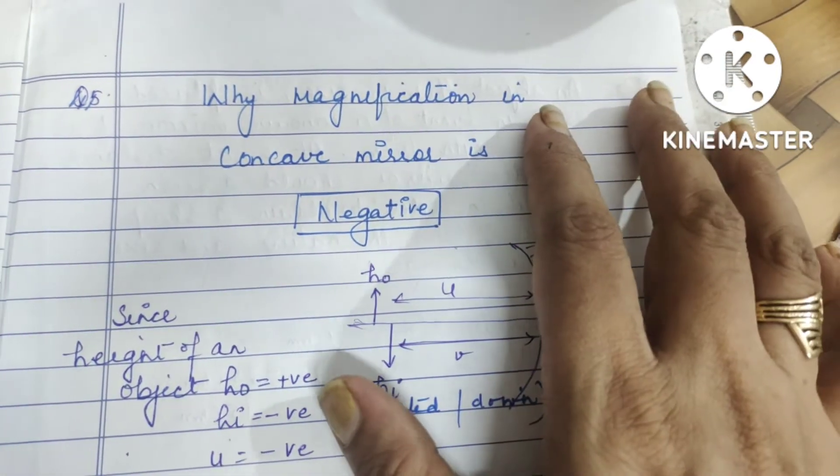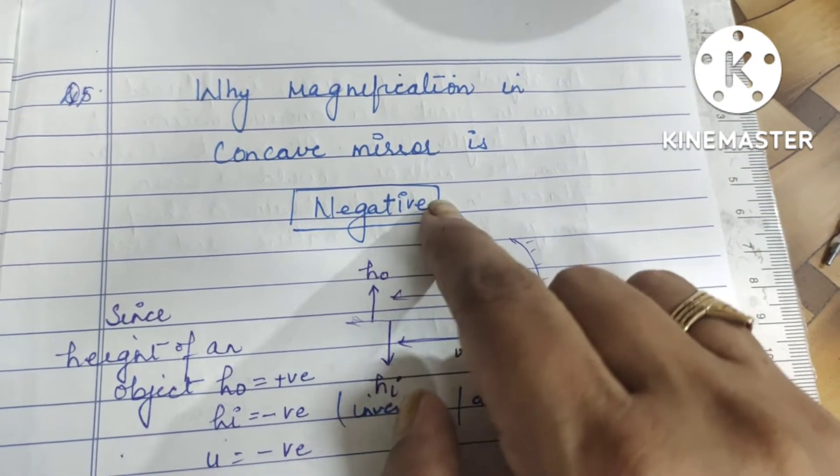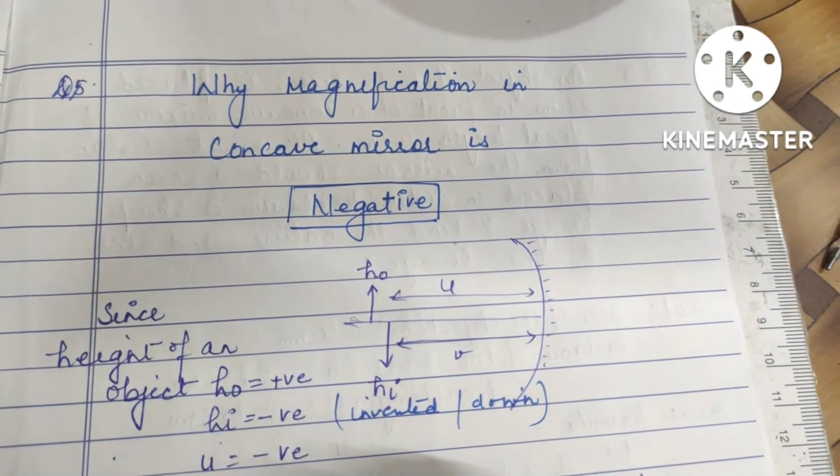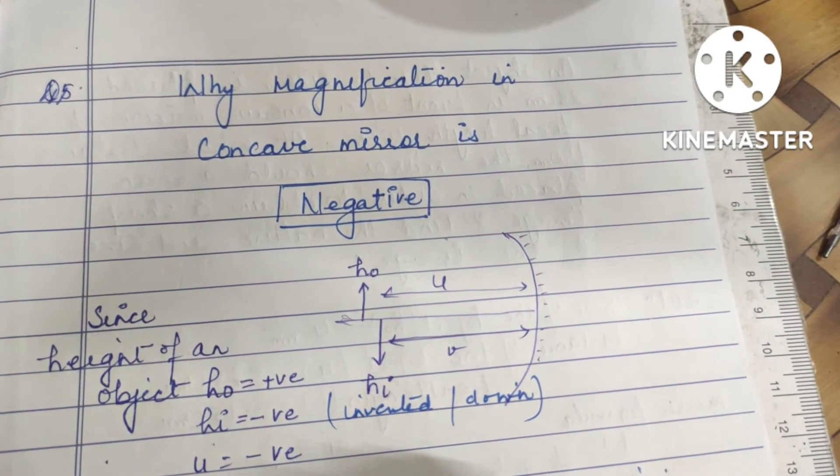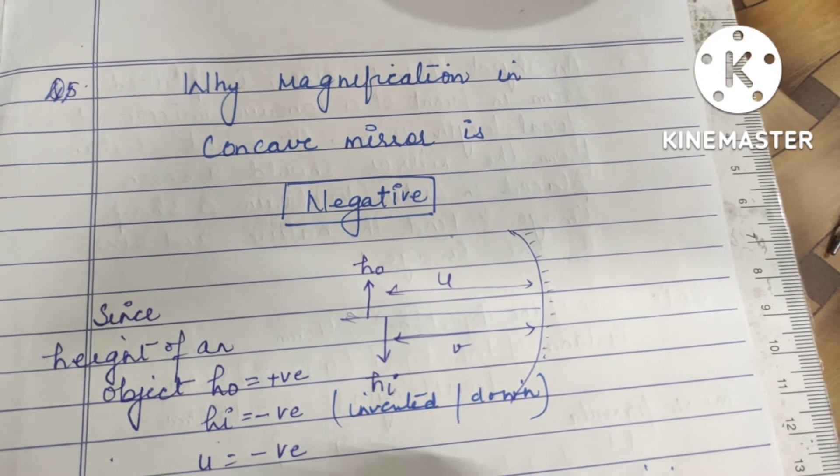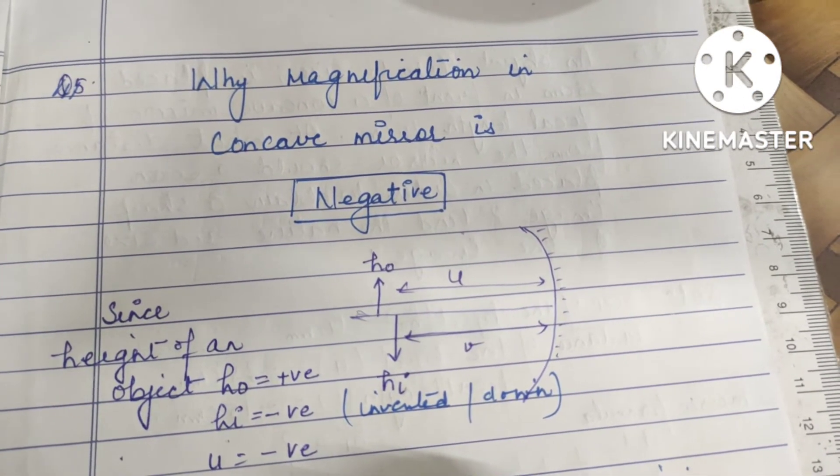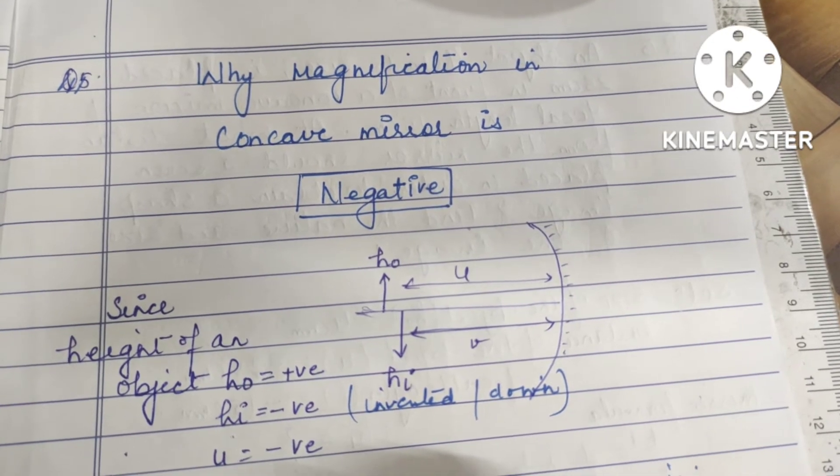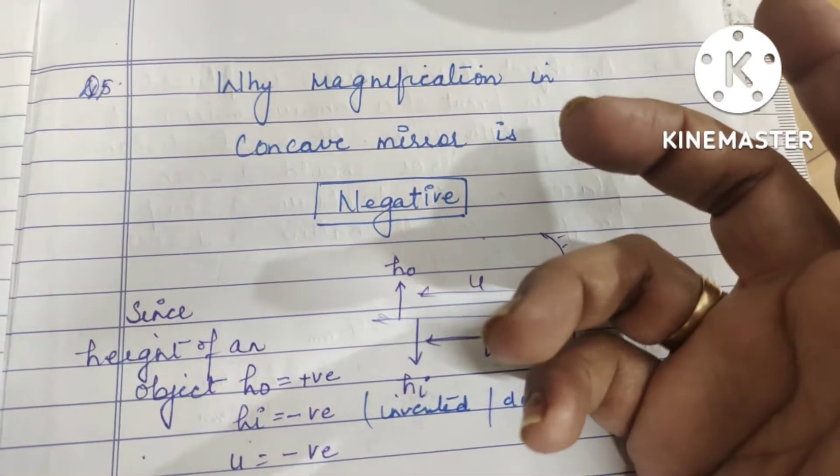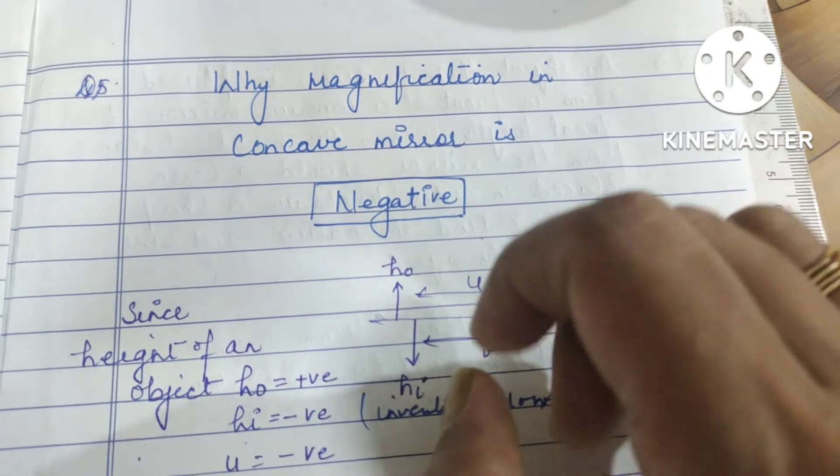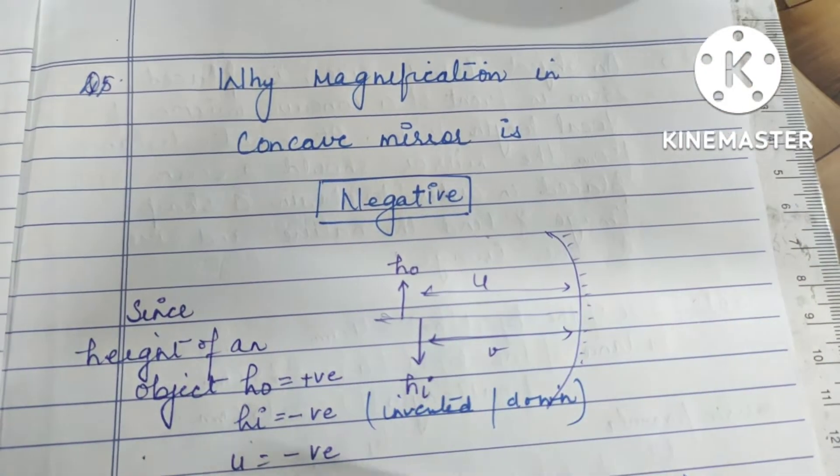Hello everyone, today we are going to see why the magnification of a concave mirror is negative. You might have seen the formula of magnification is minus v upon u, or minus height of the image upon height of the object. Why does this happen? You must watch the whole video and you will understand why the magnification is negative.